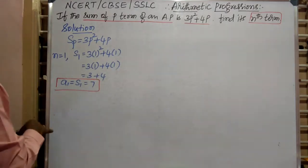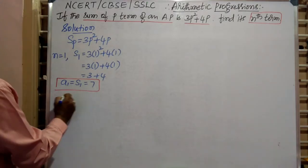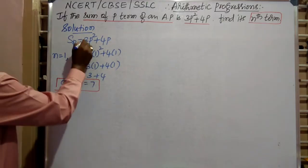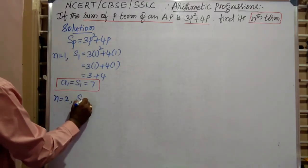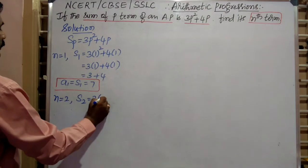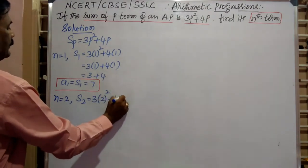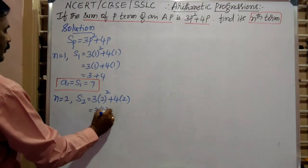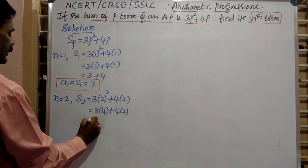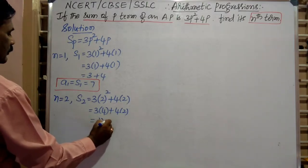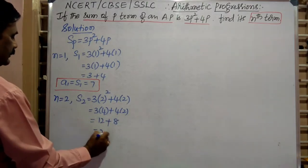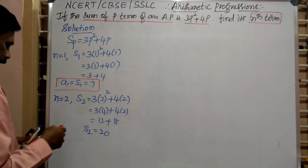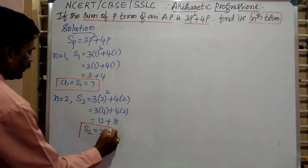Now we have to find S2, the sum of the first two terms. We put N equal to 2 in the given sum formula. Therefore, S2 is equal to 3 into 2 squared plus 4 into 2. That is equal to 3 into 4 plus 4 into 2, that is 12 plus 8, that is equal to 20. So the sum of the first two terms is equal to 20.